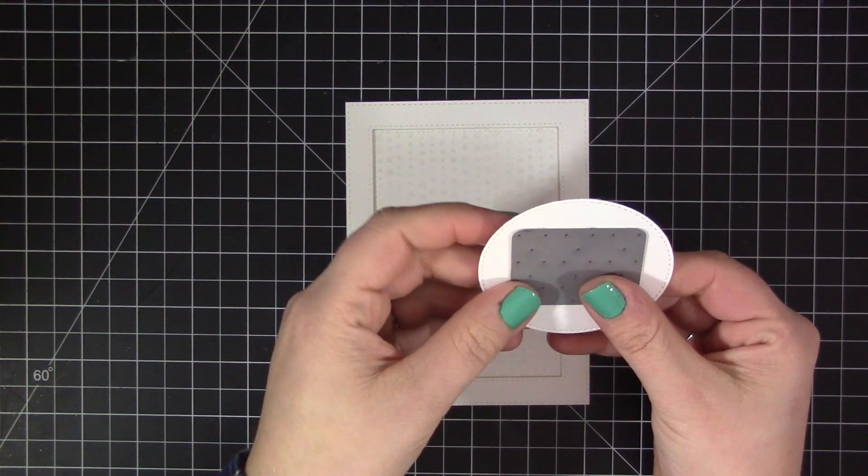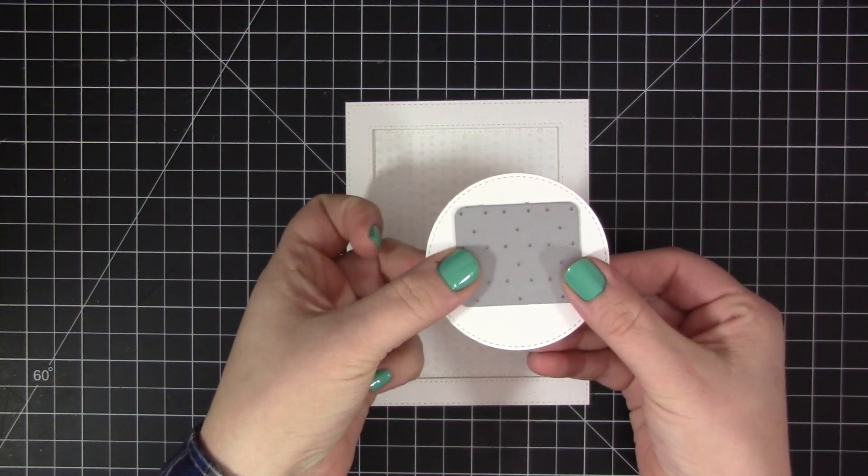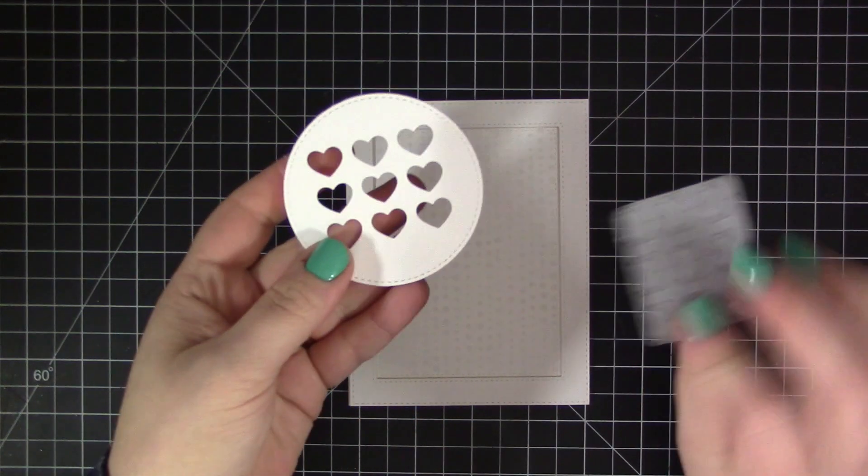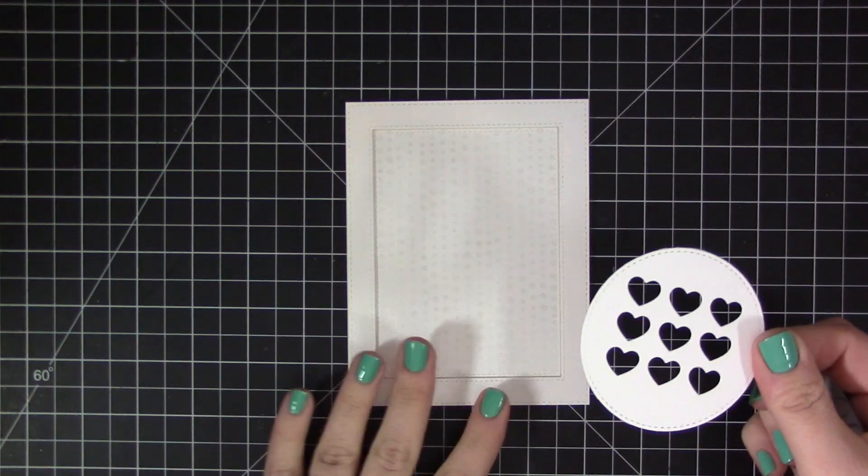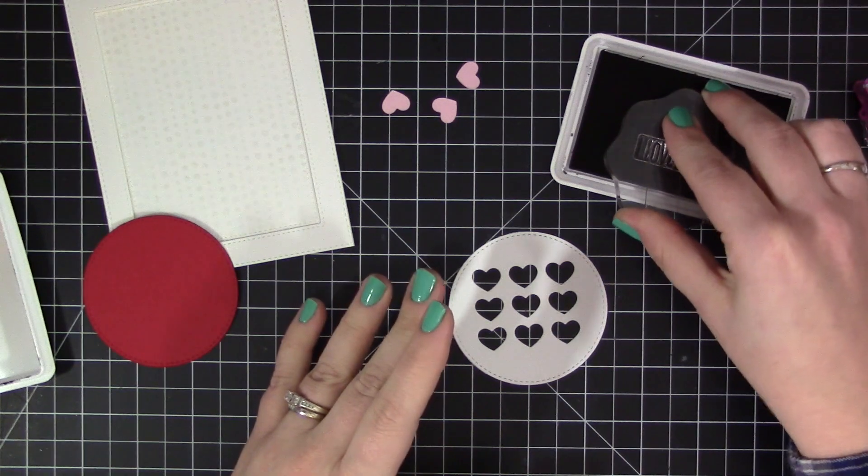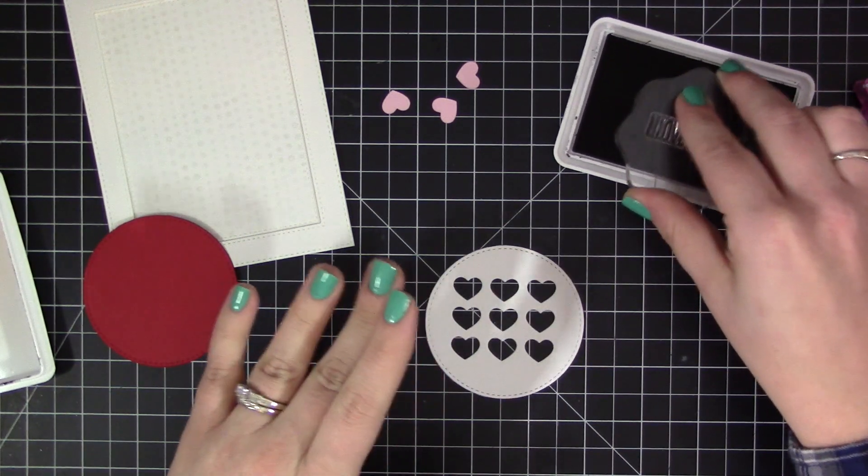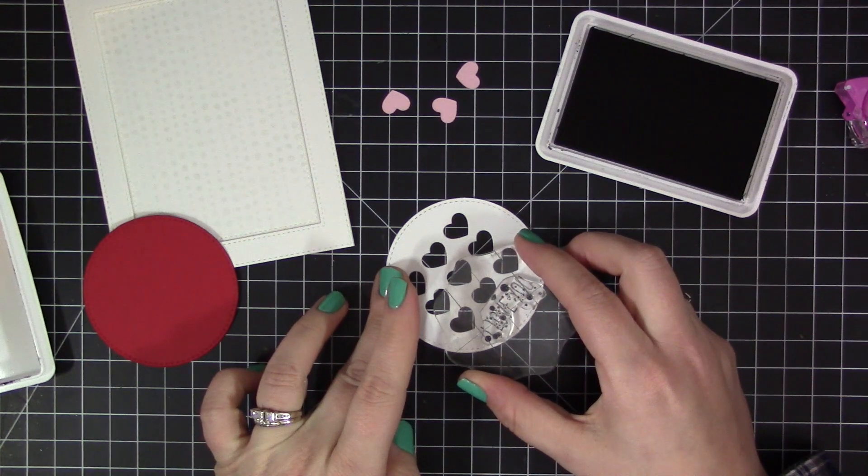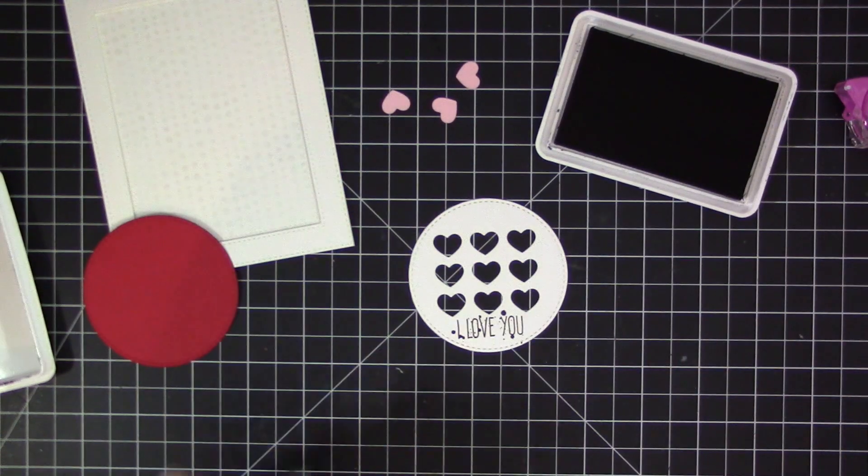Before I do any adhering, I want to do some die cutting from this stitch circle. I took this nine-heart die set that's in the Tag Builder 3 Blueprint set and cut this directly out of that white circle. You can see I have those nine hearts there. I also cut a second circle out of red cardstock and a couple of those hearts out of pink cardstock to finish up this little heart circle.